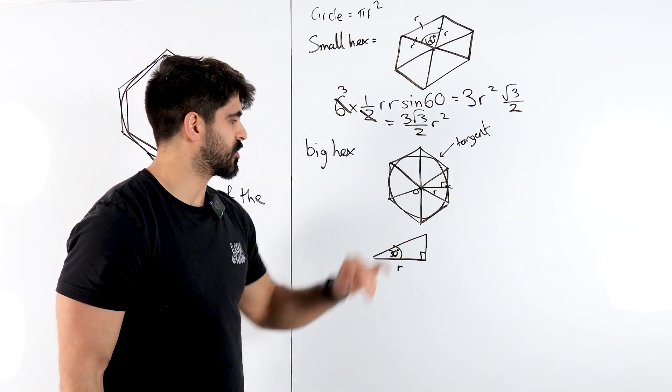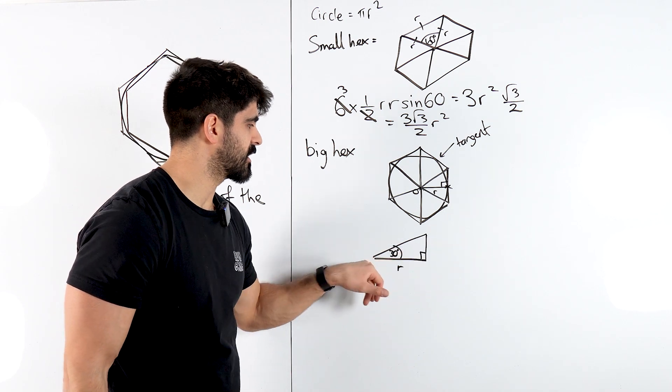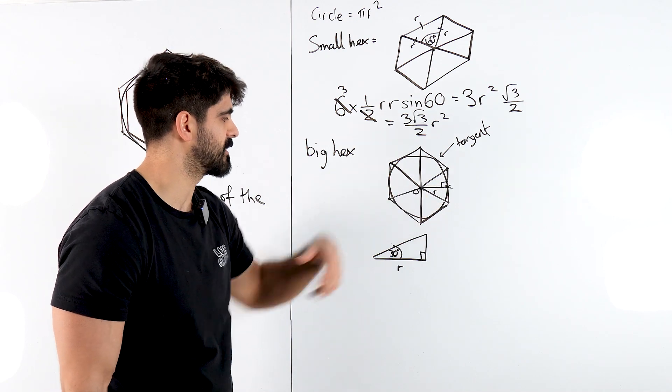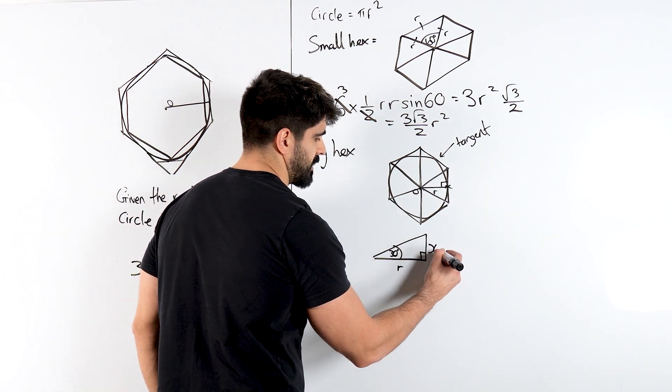Now I split up that triangle into 2, right? So basically I just want to work out this so I can do half base times height. And that will be one of these. I can then double it to get one of these and then times it by 6. So I just want to work out this length here.